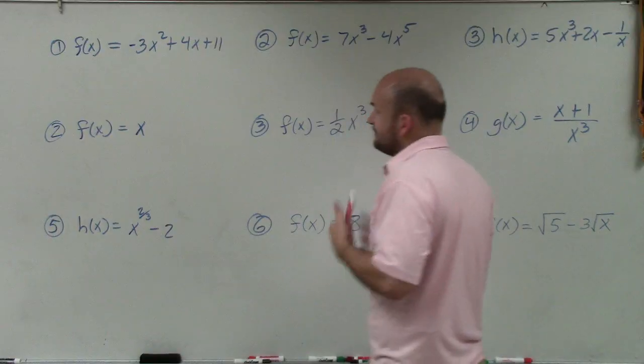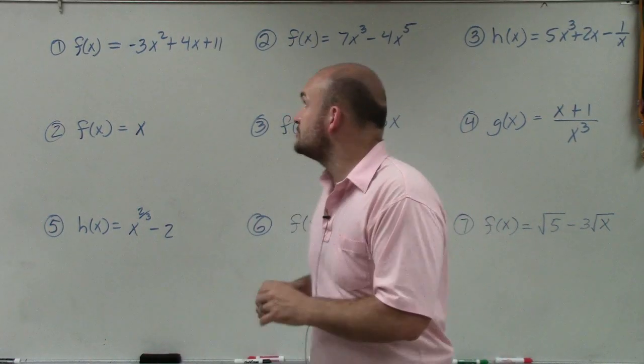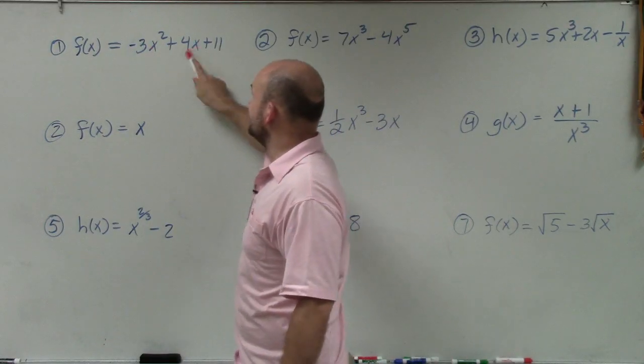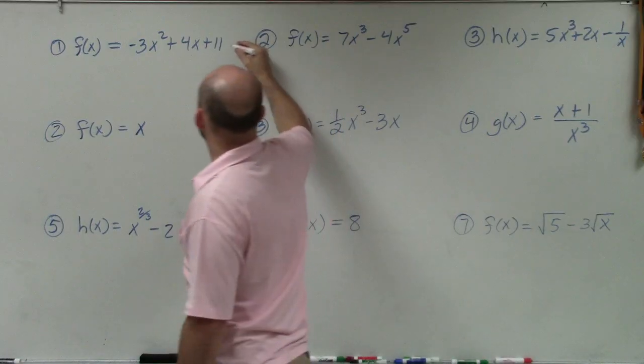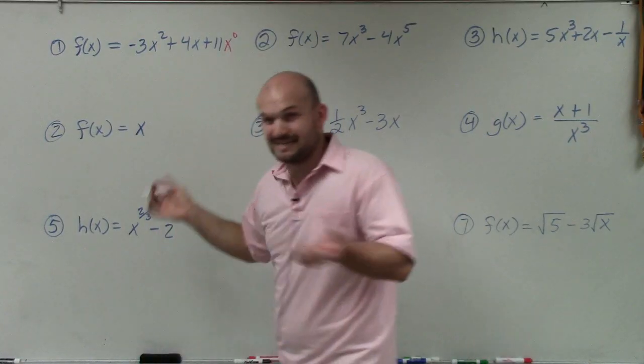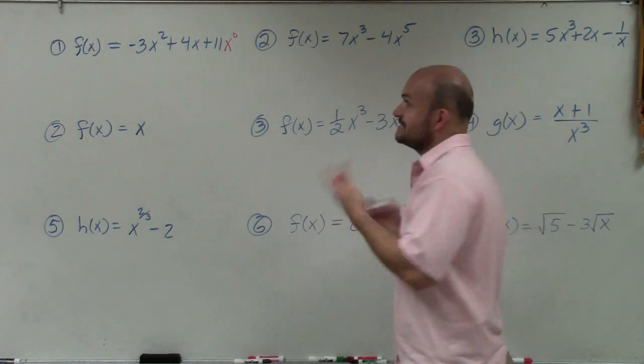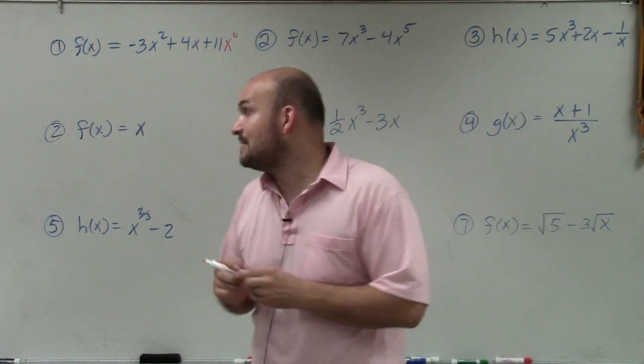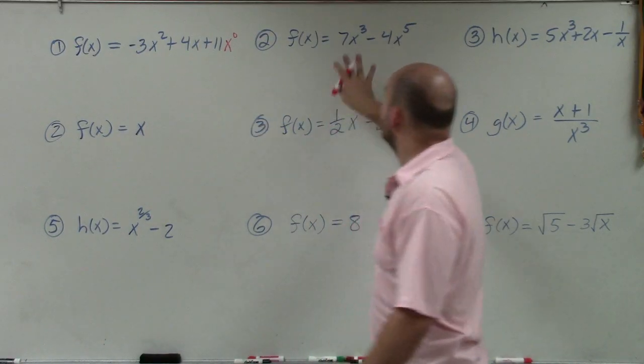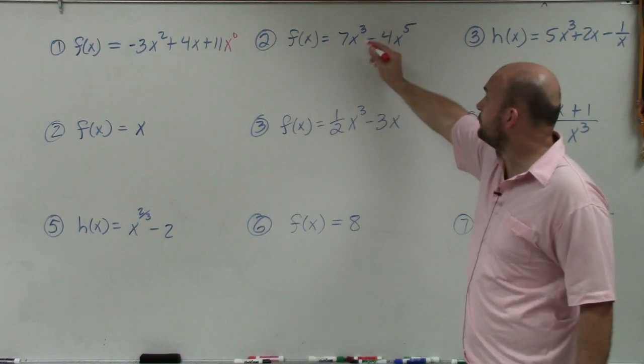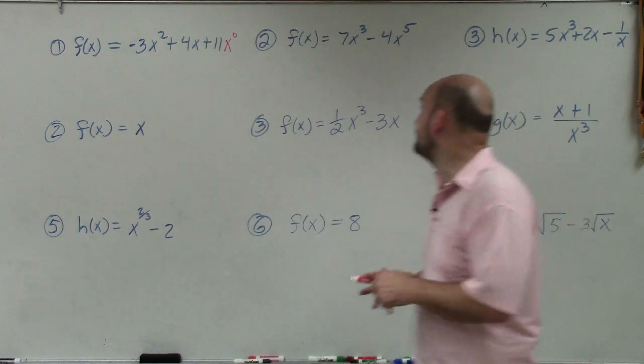When we look at this, we're going to look at every single term and make sure that we have a non-negative integer. Here we look at each term and you can see that the powers are 2, 1, and this one you could write as x to the 0 power, because x to the 0 power is 1. This is an example of a polynomial function. Over here, both of my powers are non-negative integers, so that is an example of a polynomial function.